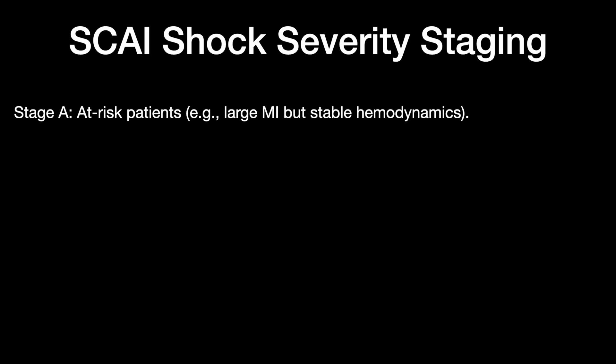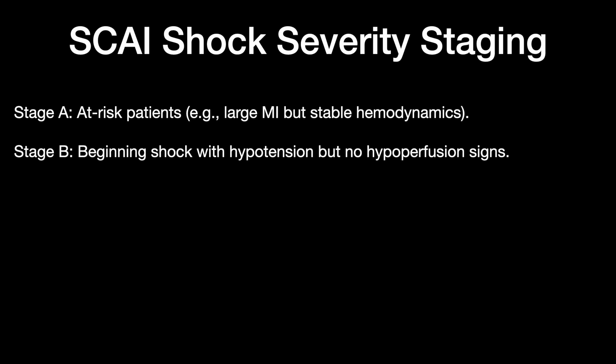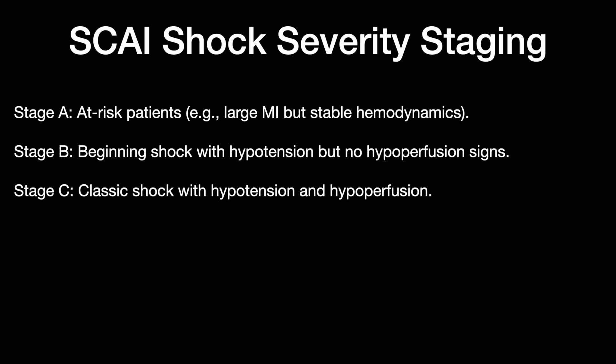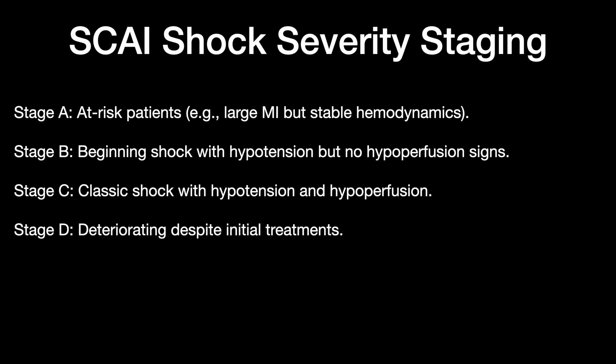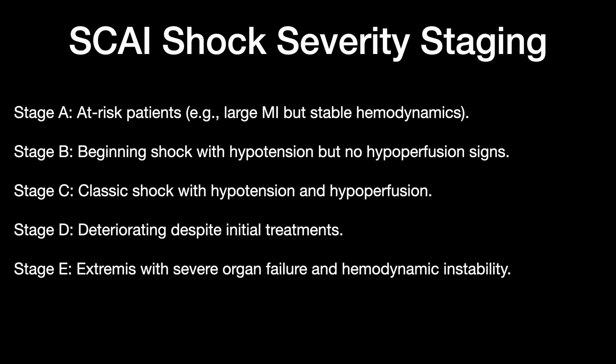The SCAI shock severity staging: Stage A — at-risk patients with large MI but stable hemodynamics. Stage B — beginning of shock with hypotension but no hypoperfusion. Stage C — classic shock with both hypotension and hypoperfusion. Stage T — deterioration despite initiation of treatment. Stage E — extreme, with severe organ dysfunction and severe hemodynamic instability.